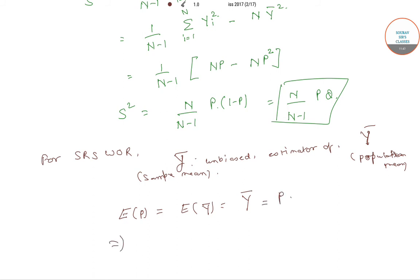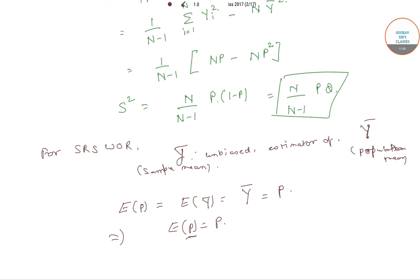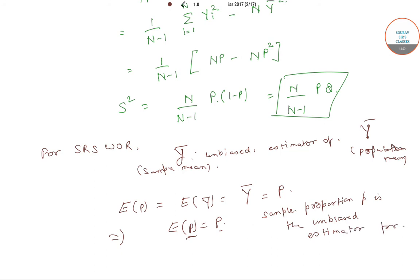This implies the expectation of p equals capital P, so the sample proportion p is the unbiased estimator for the population proportion capital P.